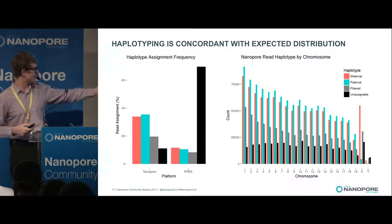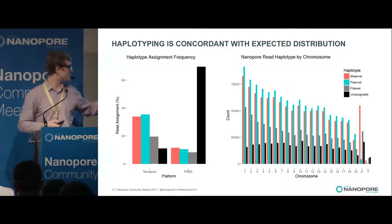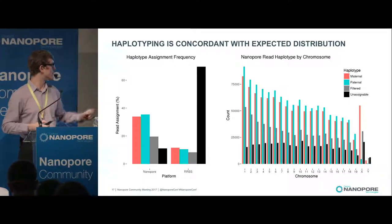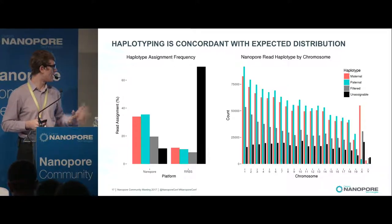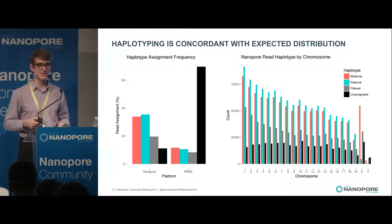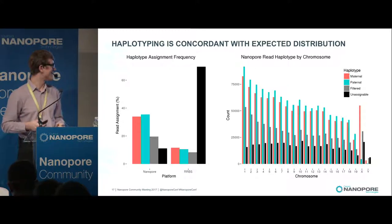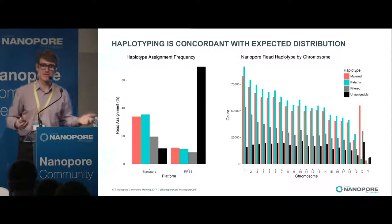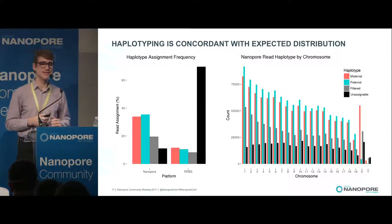This shows the same data for nanopore across chromosomes. The distribution is reasonably consistent. Also, we get the sex of our sample correct, which is a nice bonus — we have just one X chromosome, which is the maternal, as expected.